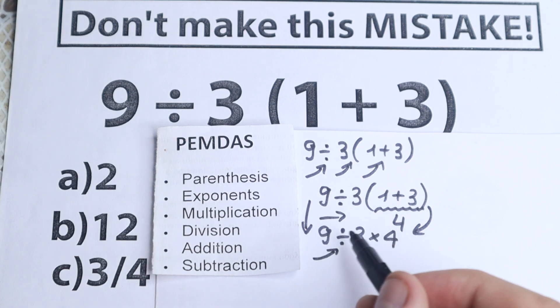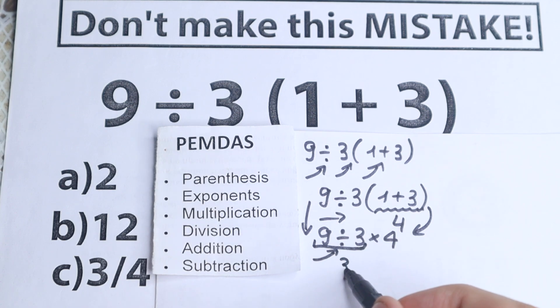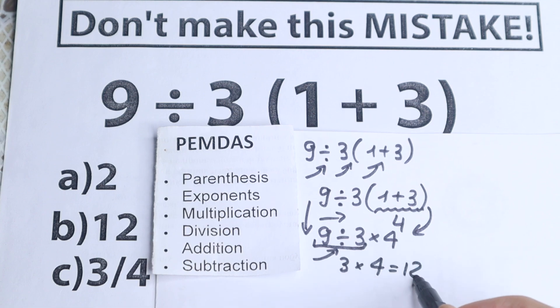So according to PEMDAS, we start from this division. 9 divided by 3 equals 3, and times 4 equals 12, which is option B.